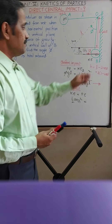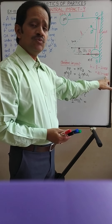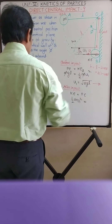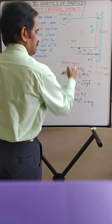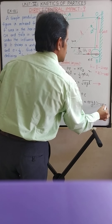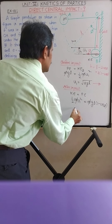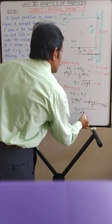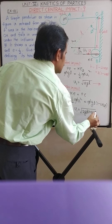After impact, the pendulum rises through a vertical height H = L(1 − cosφ). The potential energy at this position is mg·H = mg·L(1 − cosφ). Setting kinetic energy equal to potential energy and cancelling M, we get V1 = √(2gL(1 − cosφ)).